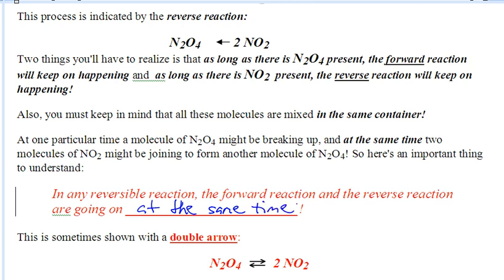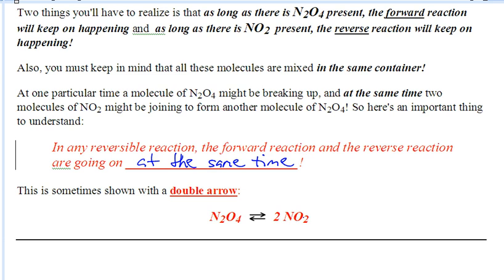In the same beaker, we have N2O4 smashing into each other to make NO2. And at the exact same time, we have NO2 smashing into each other to make N2O4. Notice the double arrows here, showing you that there is a forward rate and a reverse rate.